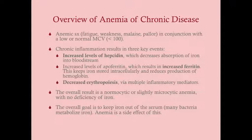Anemia of chronic disease presents with anemic symptoms — weakness, fatigue, malaise, pallor — in conjunction with a low or normal MCV. It can be a normocytic or microcytic anemia. If microcytic, the MCV usually hovers around 80. It's more commonly normocytic, but it should be on the microcytic differential.